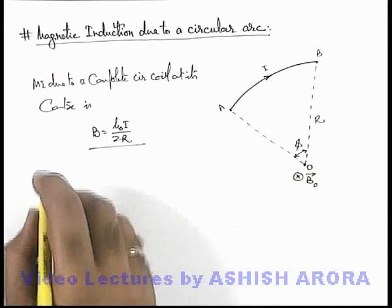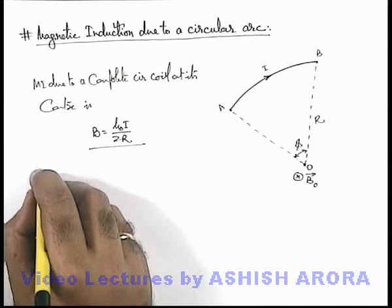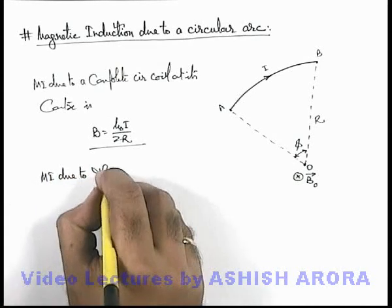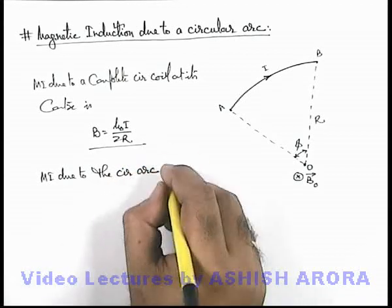This can be directly given by unitary method. So we can write magnetic induction due to the circular arc.